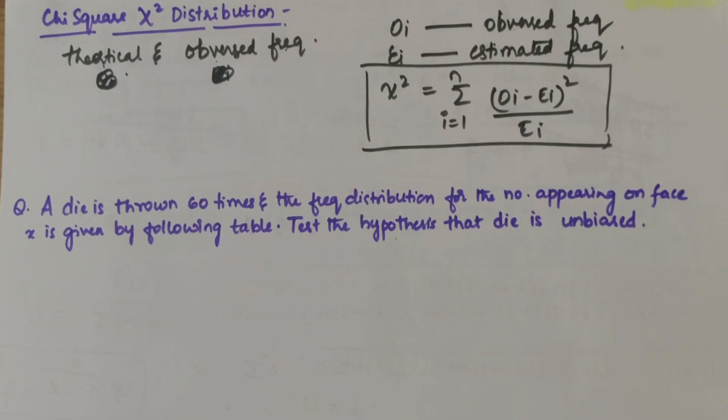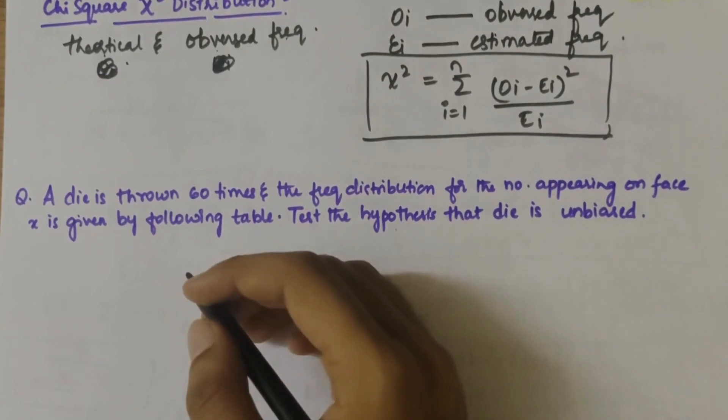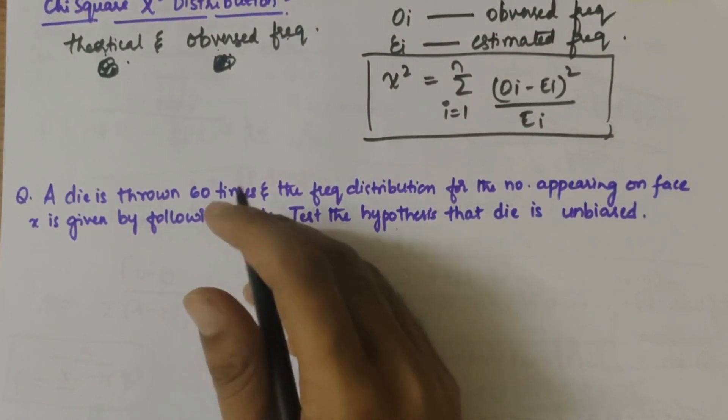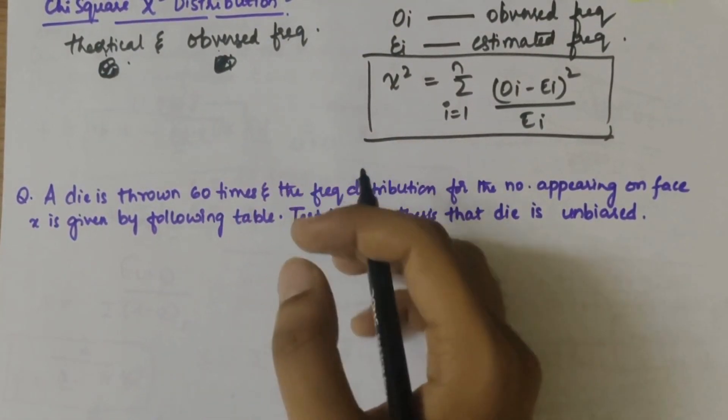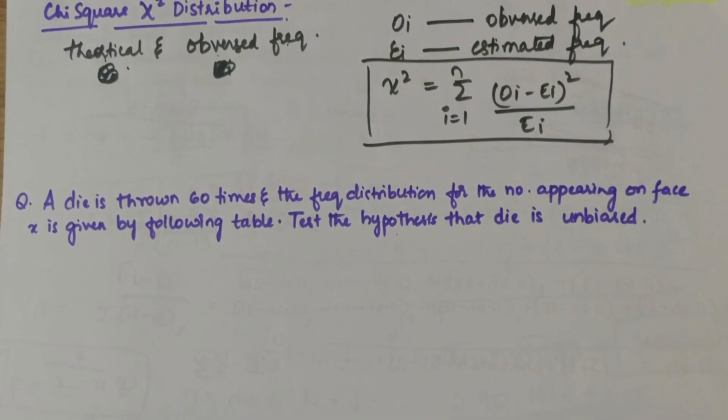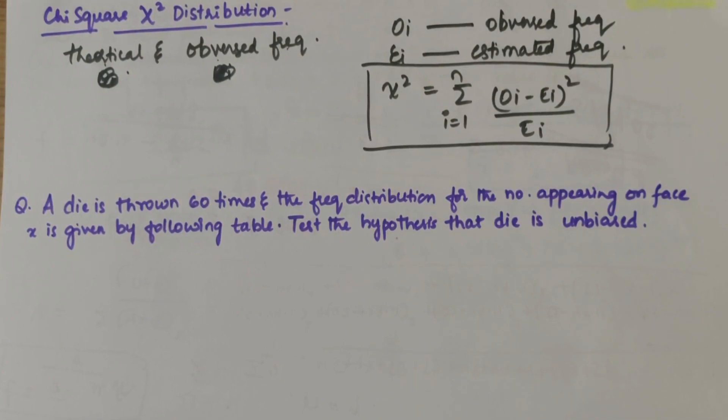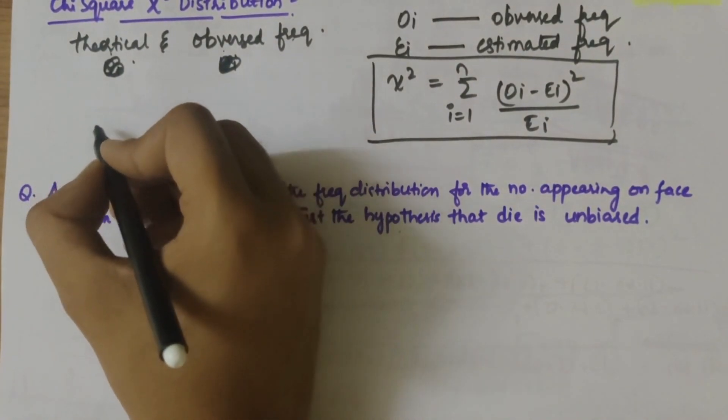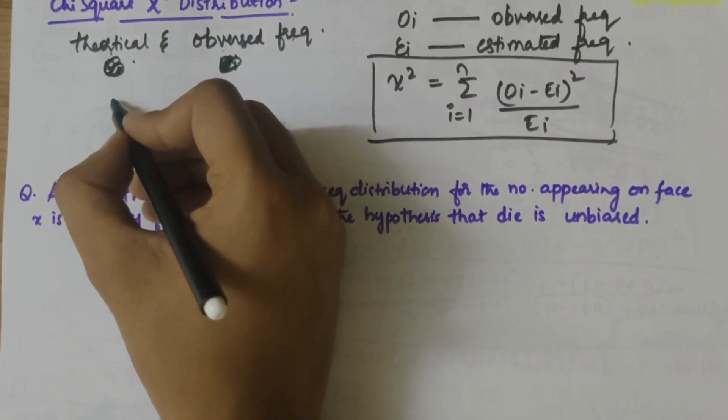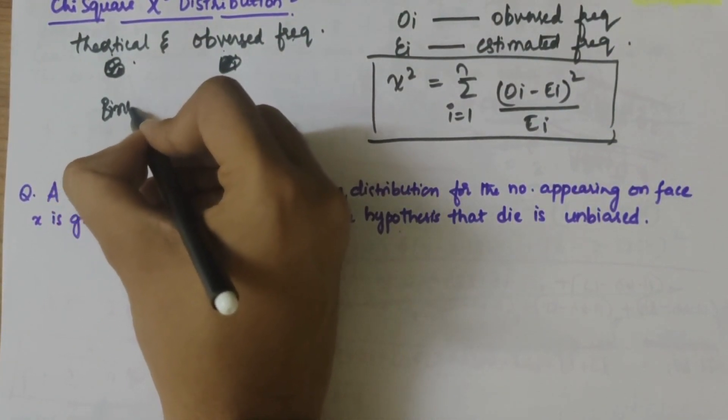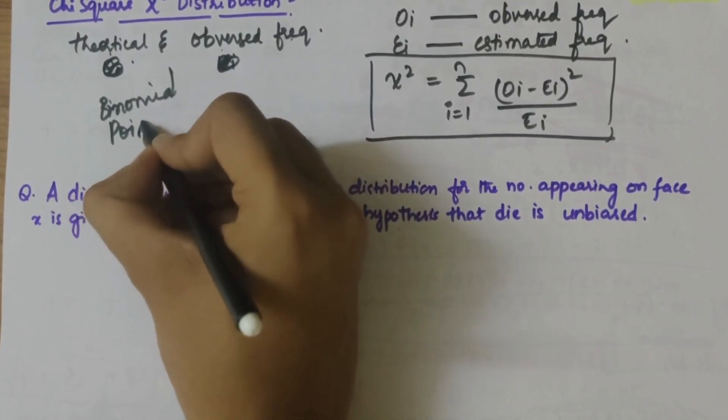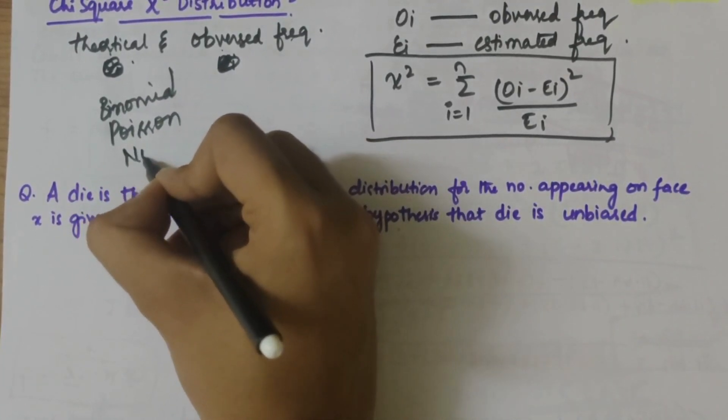This chi-square test can be taken as a test of goodness of fit. If chi-square value is less than the critical value from the table at a specific level of significance, the hypothesis is accepted. Otherwise it is rejected. Chi-square test helps us deal with different distributions like binomial, Poisson, or normal distribution.